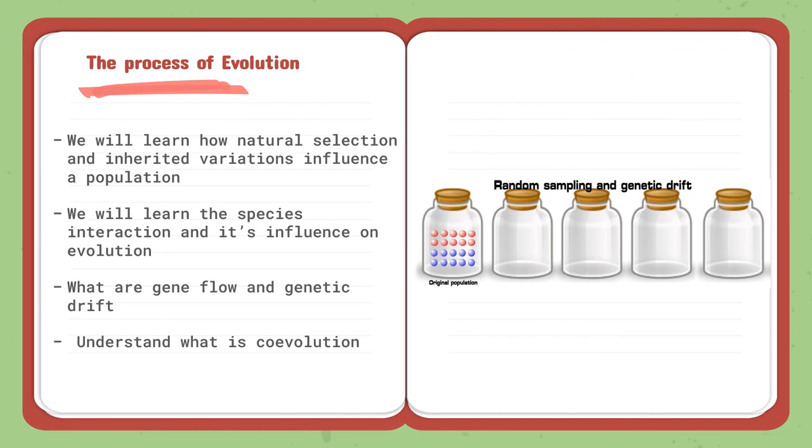The third lesson is the process of evolution. We will learn how natural selection and inherited variation influence a population. So because of natural selection and the different mutations, it's caused to change in the population of a random place. And we will learn how the species interaction and its influence on evolution. So how did the species interact after they adapted to the change? And how did that influence the evolution? And what are the gene flow and genetic drift of different species? And then we are going to understand what is co-evolution. So how two species work together to get the process of natural selection and how that evolution evolved from that.